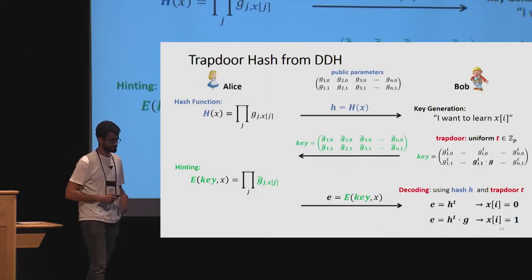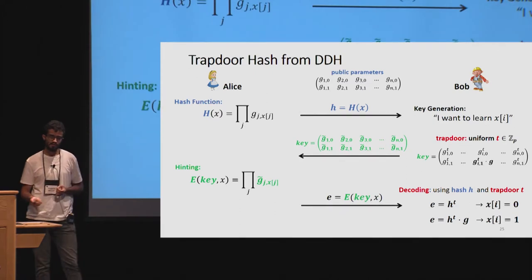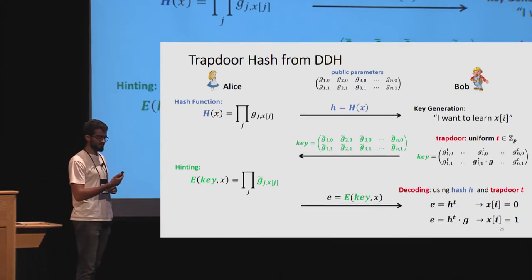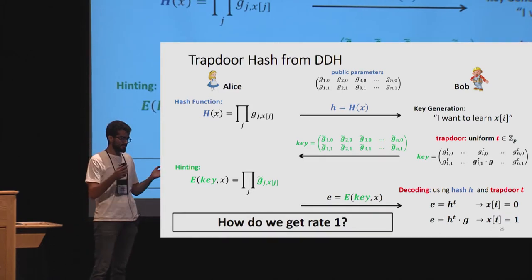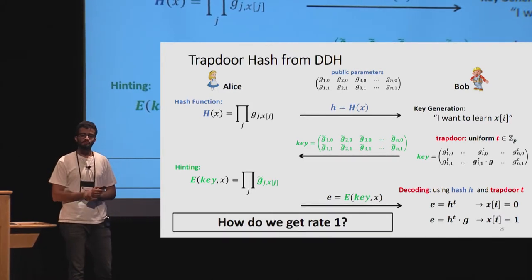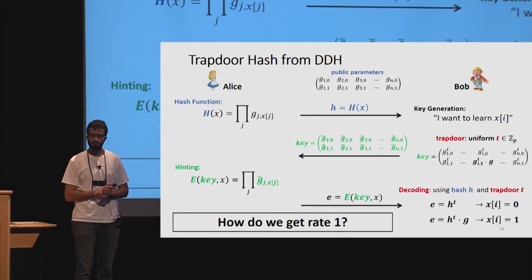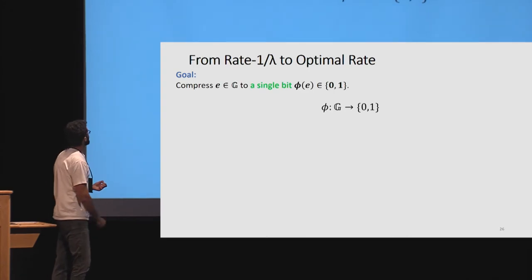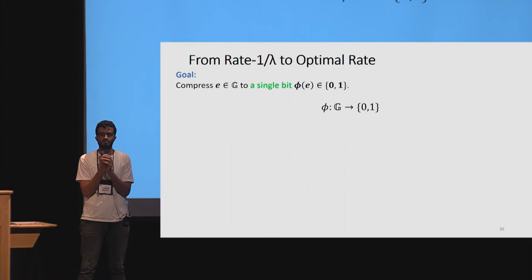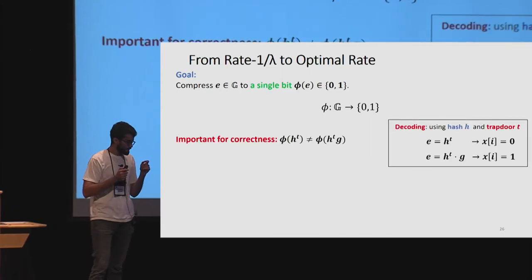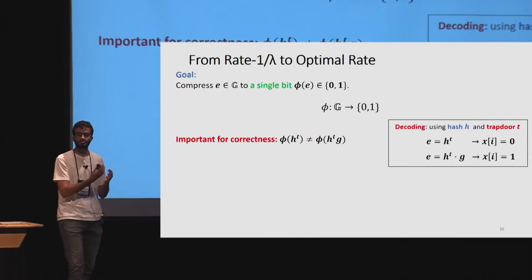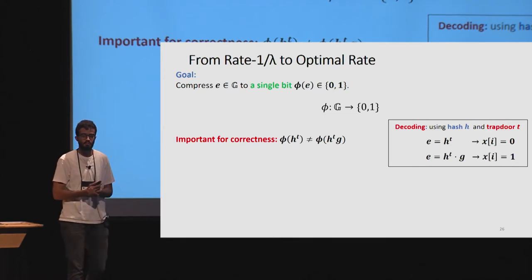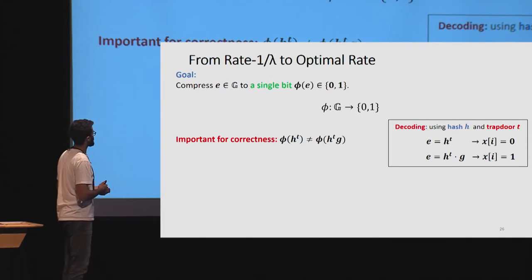This is the trapdoor hash construction from DDH, but I promised an optimal-rate construction. The current rate is 1/lambda, so the goal is to compress the hint — a group element — to a single bit. If we do that, we get a rate-1 trapdoor hash. To maintain correctness, we need to be able to distinguish the compression of h^t from the compression of h^t · g, so Bob can still determine x_i. We need some encoding to a single bit that distinguishes these two values.